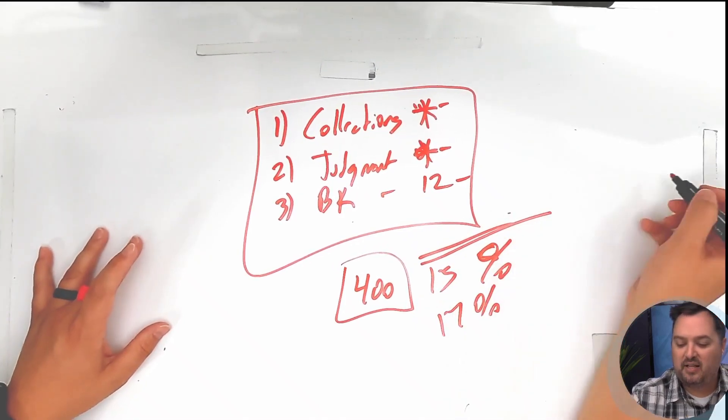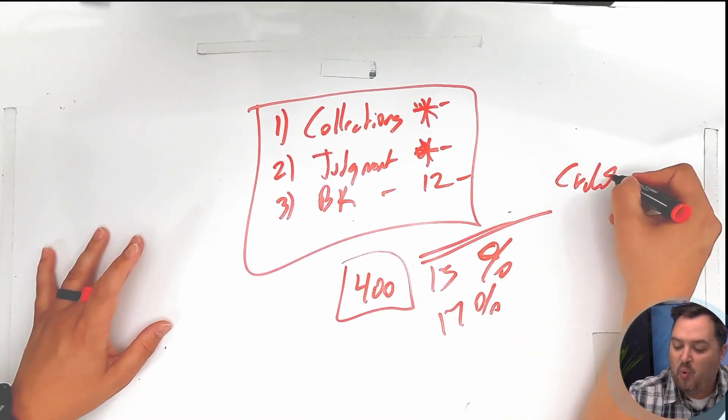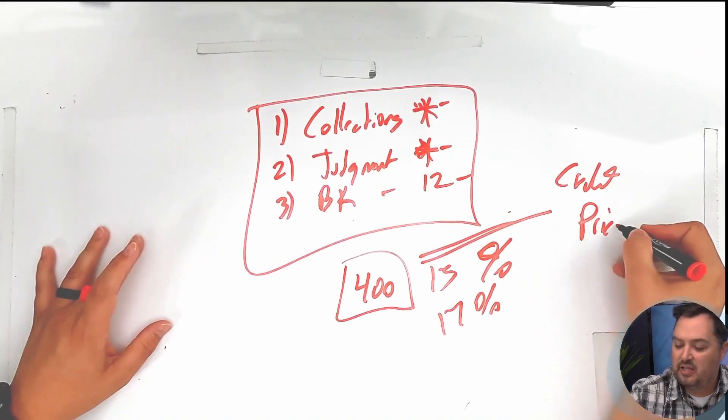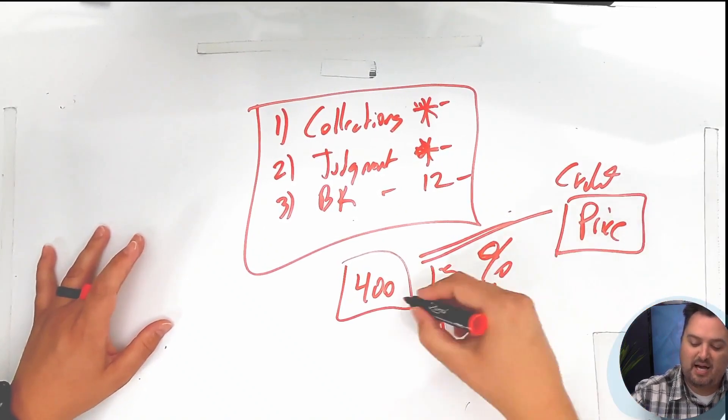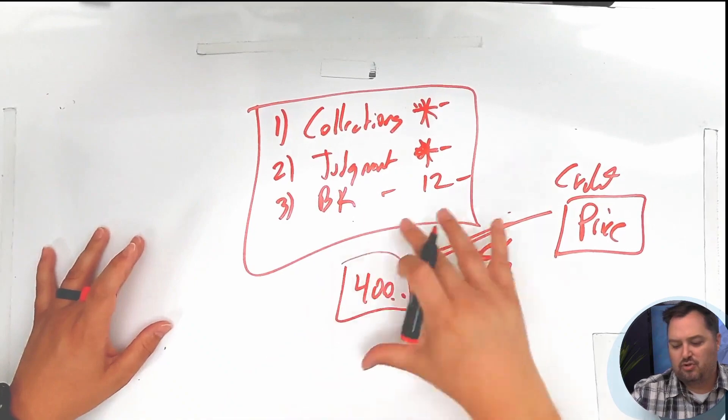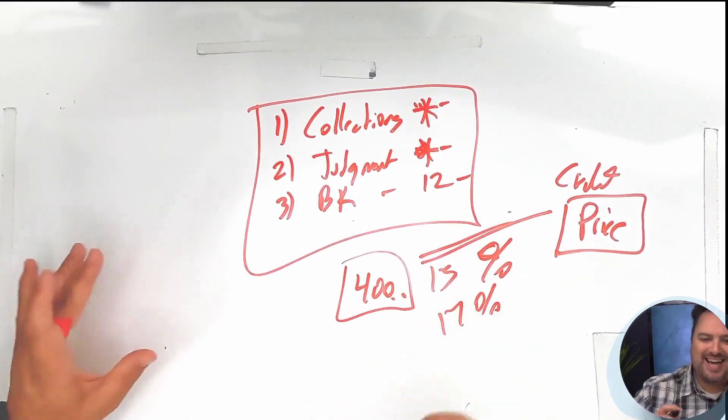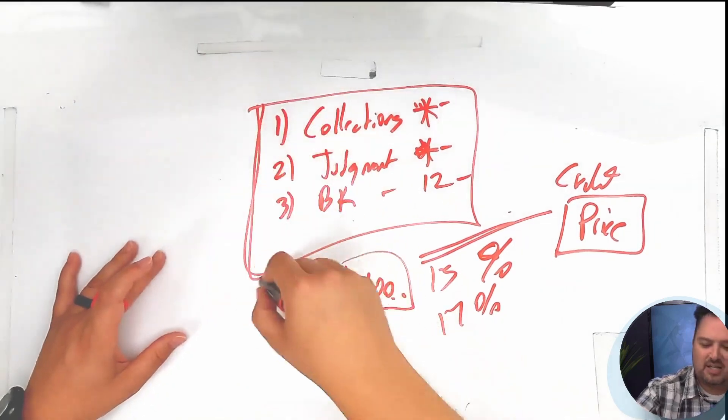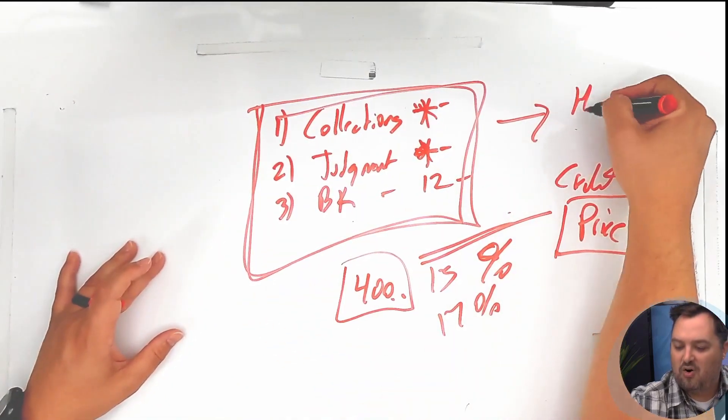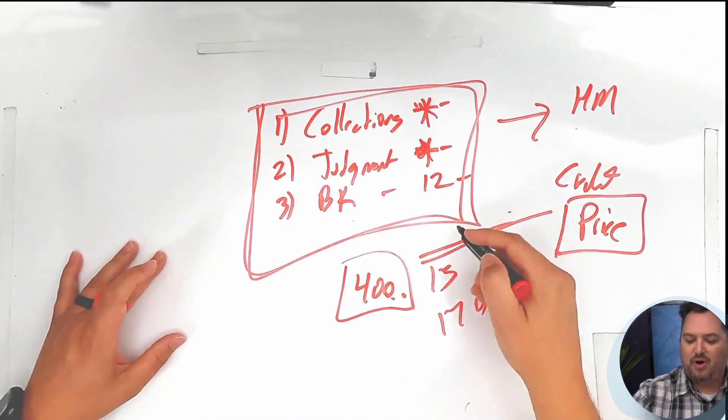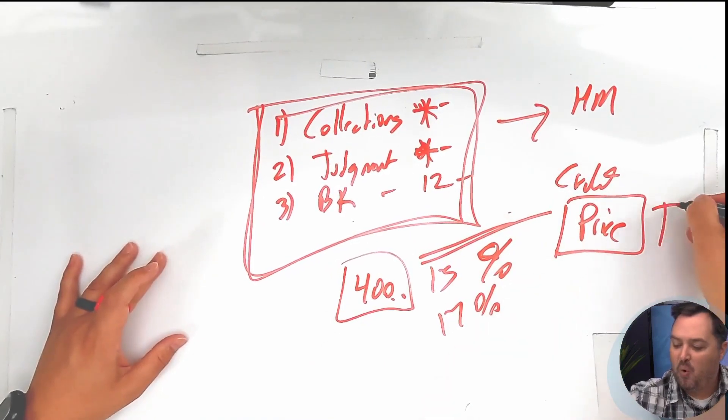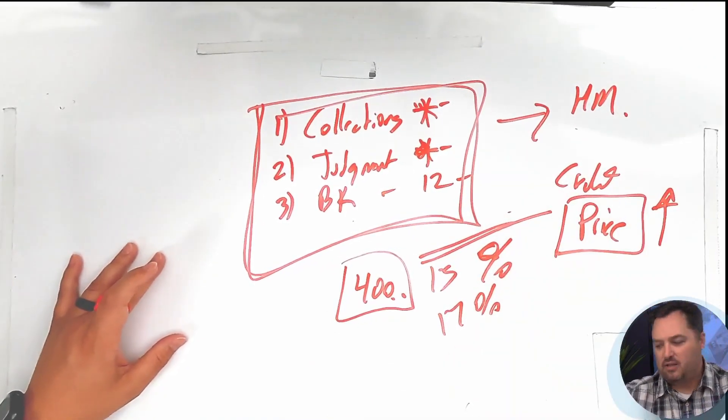So most hard money lenders are going to use your credit reporting for how they price the loan because they're gonna say we take on more risk if you're doing these things. We'll still do the loan where a traditional lender would say no way, we're not gonna do that loan. So it's kind of like this: if you don't have the collections, judgments, or bankruptcies, you're gonna be able to get a hard money loan, okay? But if you have horrible credit, you're gonna pay more to get that loan.